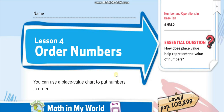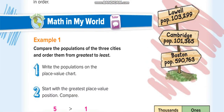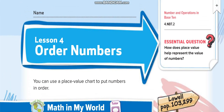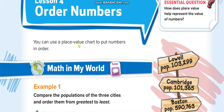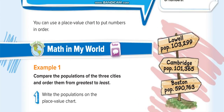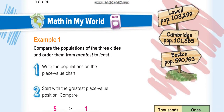Hey everyone, welcome back to another video lesson. Today's lesson is for Grade 4, Chapter 1, Lesson 4: Order Numbers, page 29. I hope all of you are ready with your books and pencils in hand. Let's start. We can use a place value chart to put numbers in order. This lesson is exactly like the last lesson — we will compare numbers and then order them from least to greatest or from greatest to least.